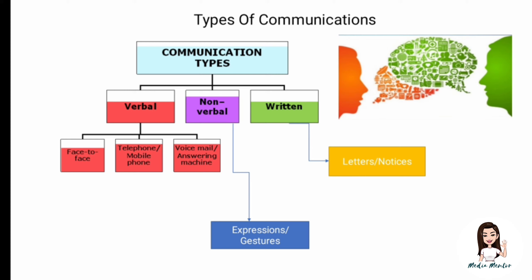The second type is non-verbal communication, which includes expressions, gestures, and body language. You see the person and understand what they want to say without them saying it. For example, if someone raises a brow, you know they are confused or angry, or a thumbs up tells you an exam went well. The third type is written communication — emails, letters, notices — anything in written form.